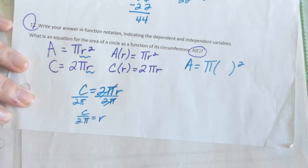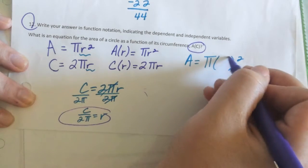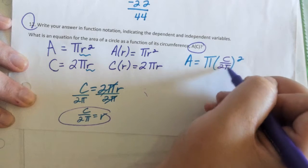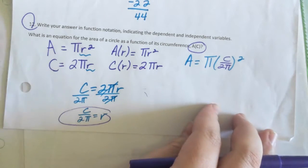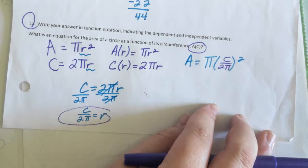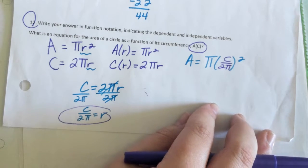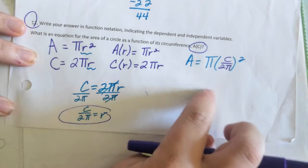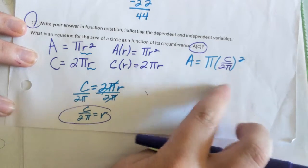C over 2π. That's why we just solved. You passed your other math classes and made it to me. So you know how to substitute. So everywhere you see an r, we put C over 2π. It used to be πr². Now it's π(C/2π)².